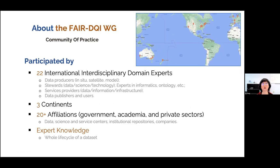The FAIR Dataset Quality Information Working Group consists of 22 international interdisciplinary domain experts across three continents, affiliated with government agencies, universities, and private sectors. We bring knowledge and experience from our own domains and organizations to the working group, and bring back the knowledge gained as well as lessons learned from development of the guidelines back to our own organizations. So it is like a community of practice.